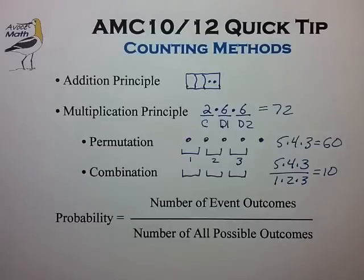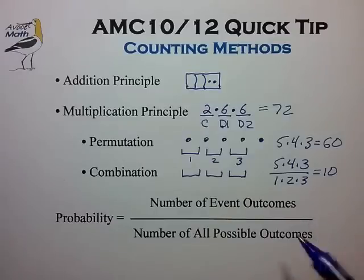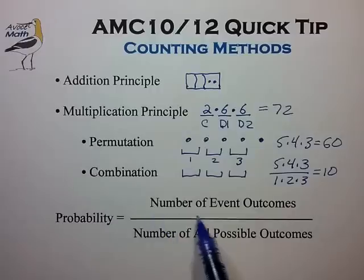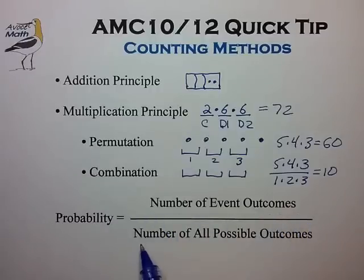The probability of an event can often be calculated as the ratio of two counting results: the number of event outcomes of interest divided by the number of all possible outcomes.